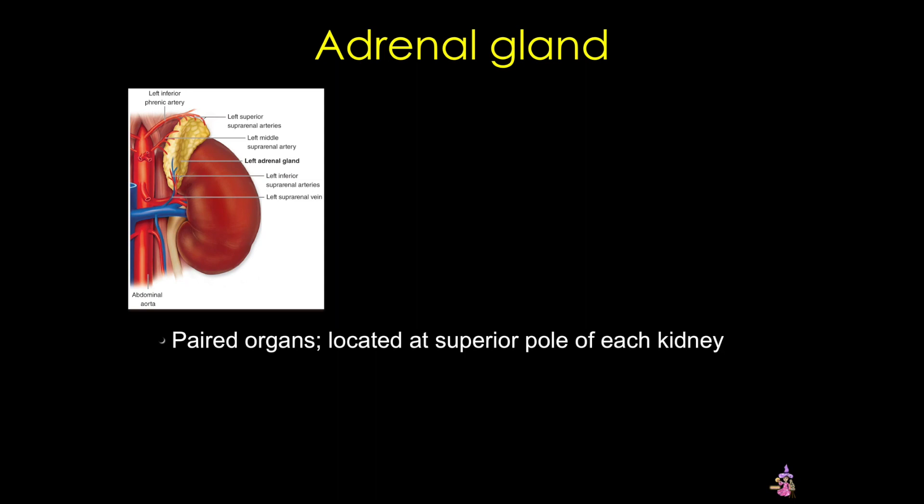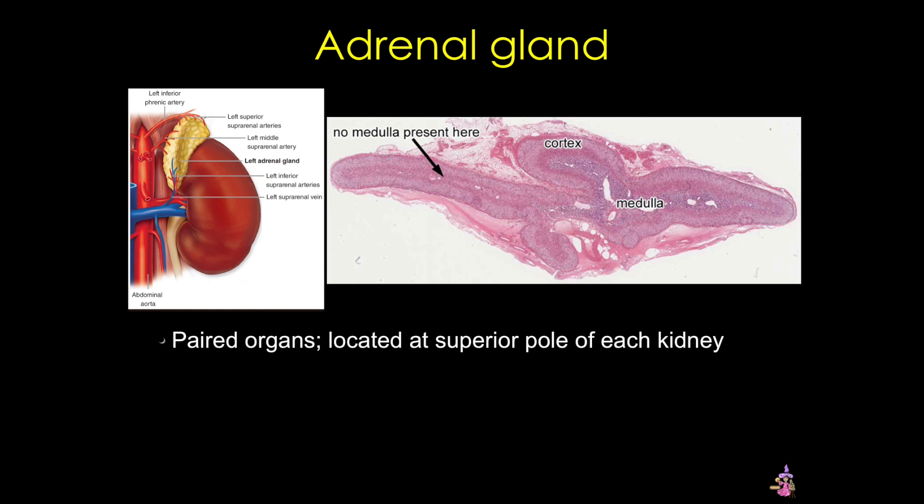The adrenal glands are paired organs at the top of each kidney. These organs play vital roles in the maintenance of body water and sodium balance, in controlling blood pressure, and in regulating the body's adaptive responses to stress. Each adrenal gland is composed of two distinct regions, and these regions differ in origin, structure, and function.